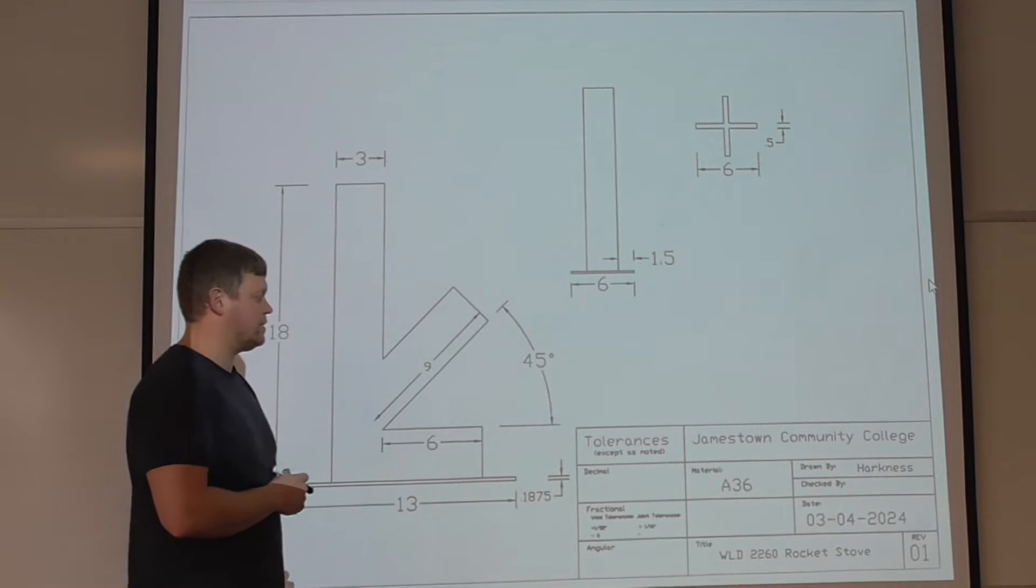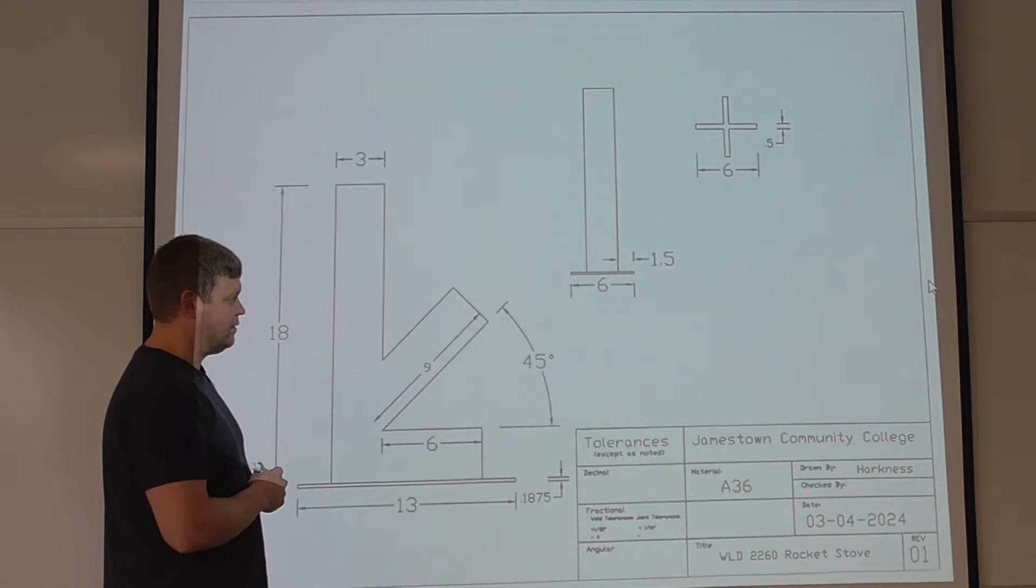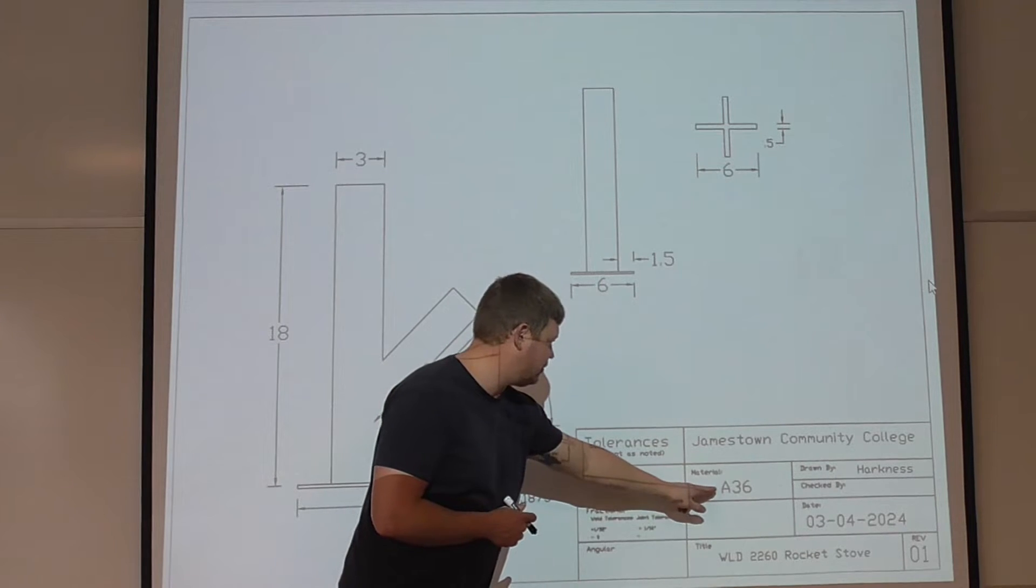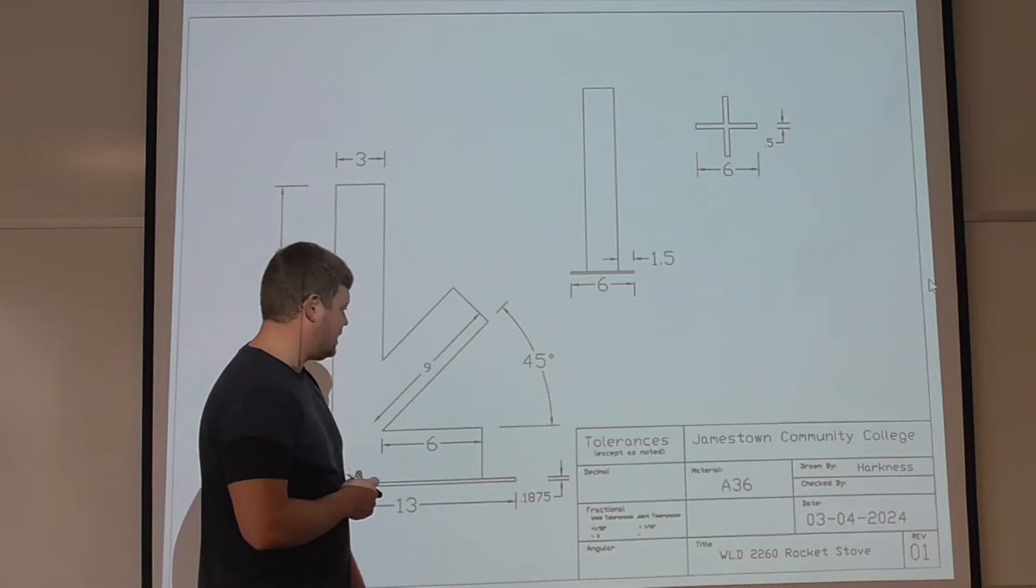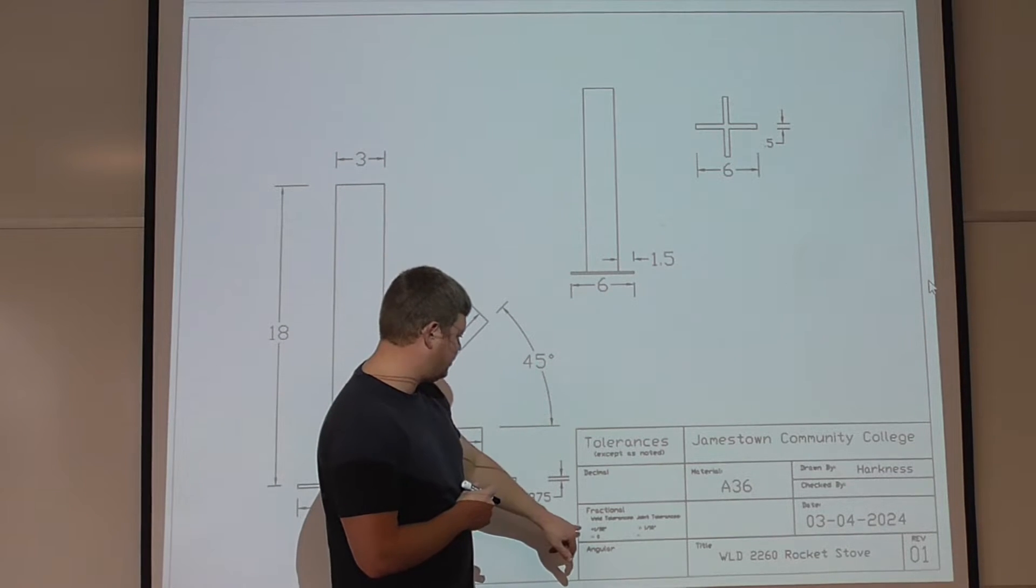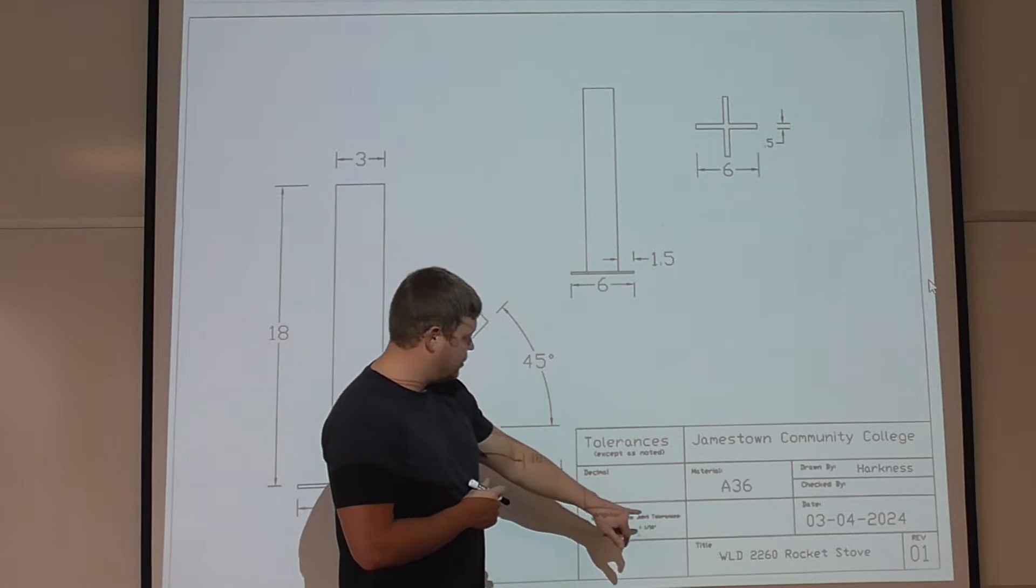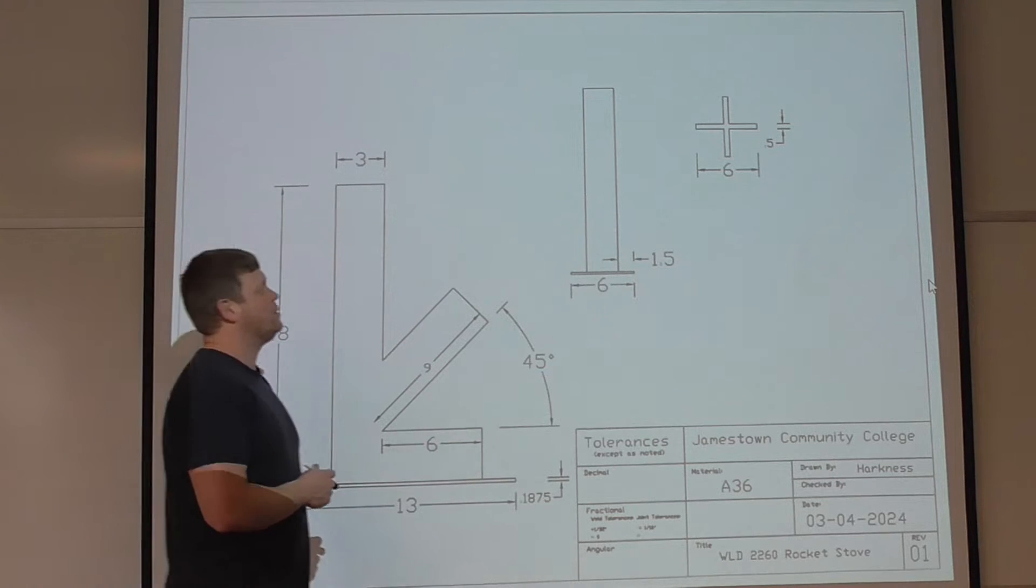And then you can see, here's the rest of the information over here and the title block, and you can see it's at the Jamestown Community College, which has a very prestigious welding program. Your material's A36, date created, rocket stove, and the tolerances are basically plus a 16th on the welds, minus zero joint tolerance, plus or minus 16th of an inch.